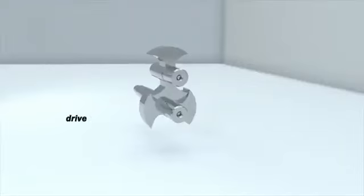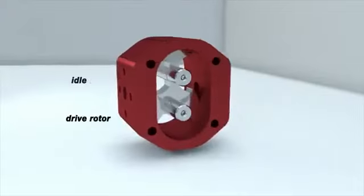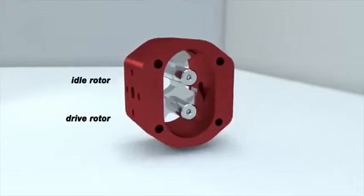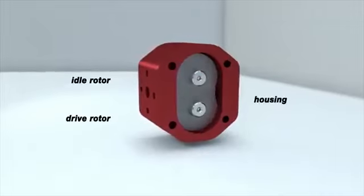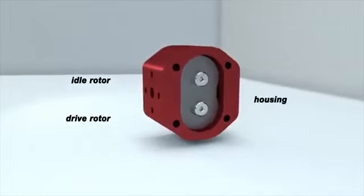How do lobe pumps work? Let's try to figure it out. The drive and idle rotors are installed in the pump housing. The rotors can rotate on rolling or sliding bearings as shown in our example.